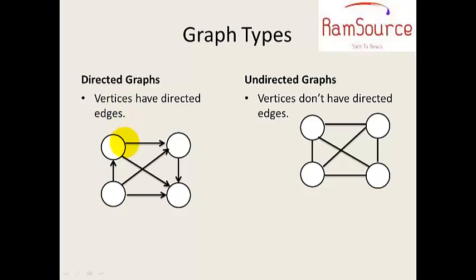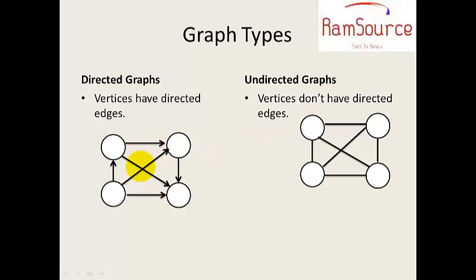In an undirected graph, you can go in either direction — they are not directed. Directed graphs are one-way, while undirected graphs have no restrictions on direction. These are all the types of graphs.